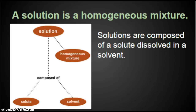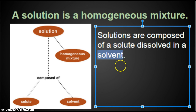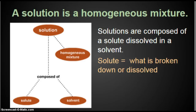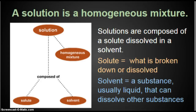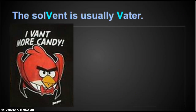A solution is a homogeneous mixture, and solutions are composed of a solute dissolved in a solvent. So we have three vocabulary words: solution, solute, solvent. The solute is the thing or the chemical that is broken down or dissolved. In lemonade, it would be the sugar — the sugar is broken down and dissolved, that would be the solute. The solvent is a substance, usually a liquid, that can dissolve other substances. The solvent is usually water.